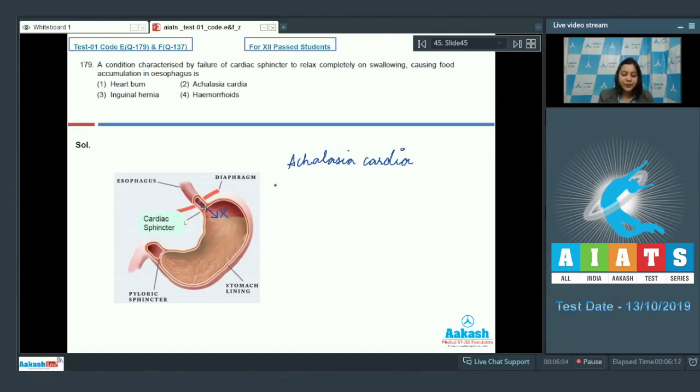Let us look at the other options. Another condition is heartburn. Heartburn is when this sphincter fails to contract completely, there is regurgitation of stomach contents back into the esophagus. Now, since stomach contains gastric juice which is acidic in nature, the person feels a burning sensation in the esophagus or in the chest region which is also known as heartburn. So this occurs in case of reflux of contents of stomach into the esophagus.